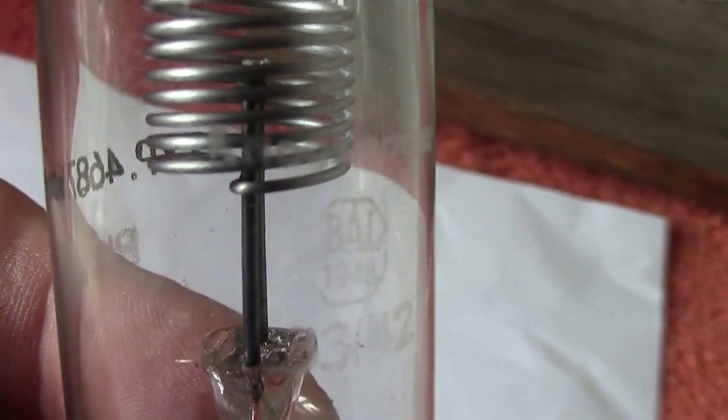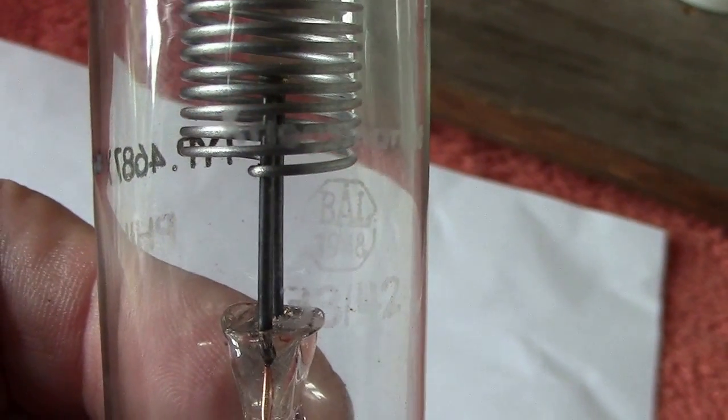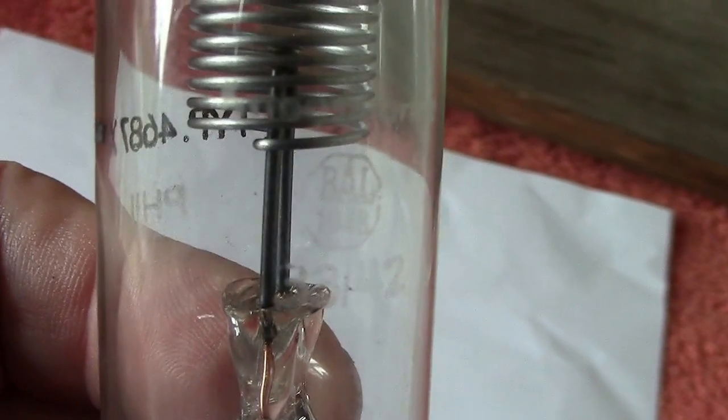There's a little symbol there which might come up I don't know, we can but hope. I'll read it out anyhow so you know what it is. It says in a little octagon BAL 1948, and underneath you've got another number three three stroke 42.